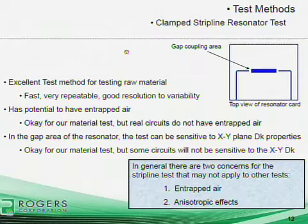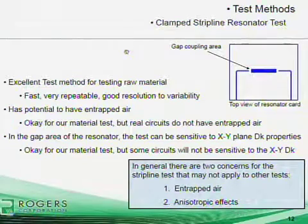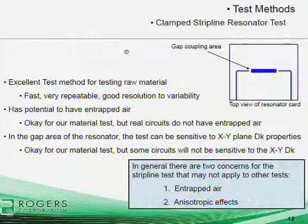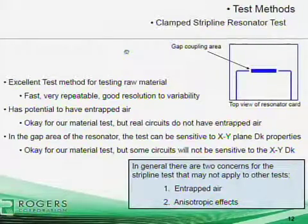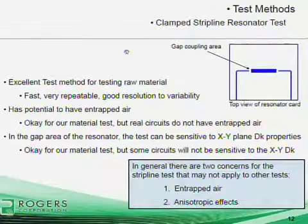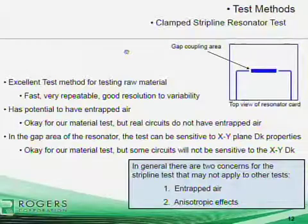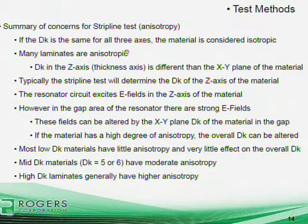Some challenges with this test method: as you clamp everything together, you can entrap some amount of air. Air has a very low dielectric constant around 1, so that causes the test method to report a lower Dk than it normally would. Second, in the gap-coupled area there are electric field fringing effects. We're trying to test the z-axis of the substrate, where the dominant electric fields are, but in the edge-coupled areas there are strong electric fields that pick up the XY-plane properties. Therefore, if the material is very anisotropic, the overall reported Dk can be altered.